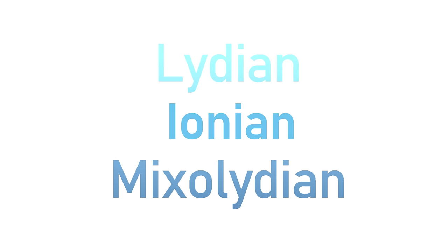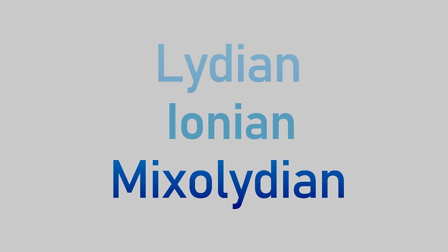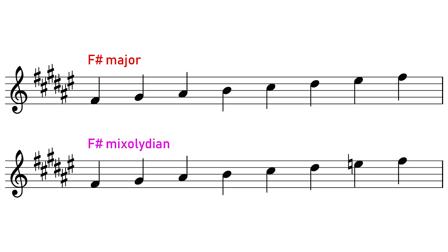So that was Lydian, the brighter version of the major scale. Now let's listen to Mixolydian, which is the slightly darker version of the major scale. Mixolydian is exactly the same as the typical major scale, but the seventh degree has been lowered.